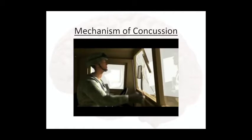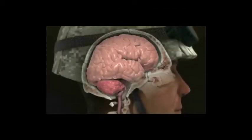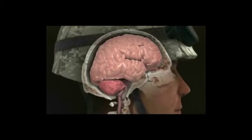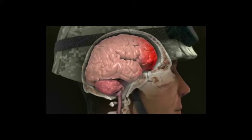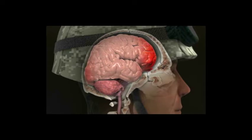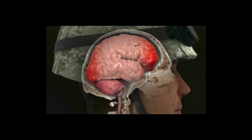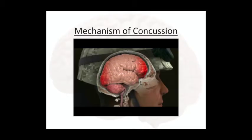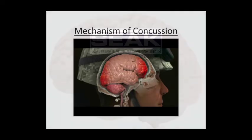There's a little video here on the mechanism of concussion. A blow to the side of the head causes damage to the brain where it hits the skull — the brain is injured at the point of direct impact. Because it bounces back into the opposite side of the skull, the opposite side of the brain is also injured. This video has been edited.